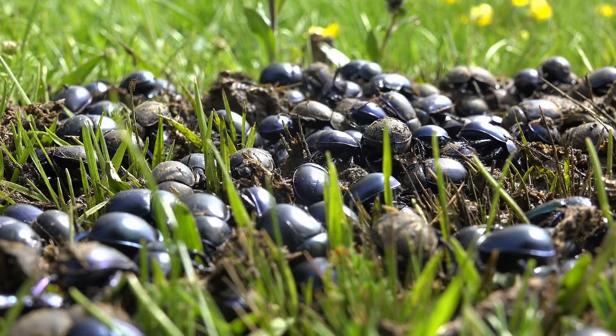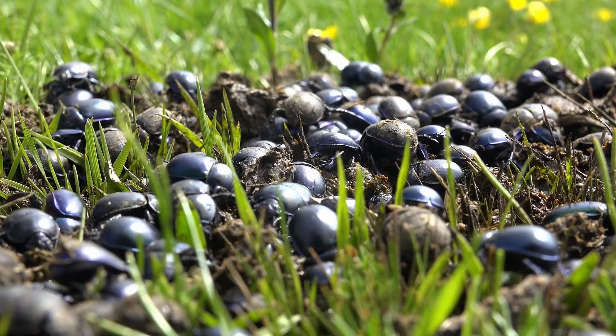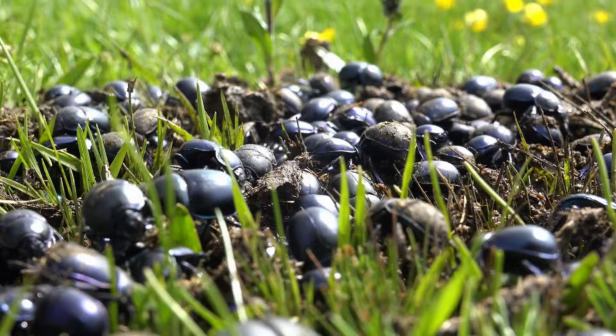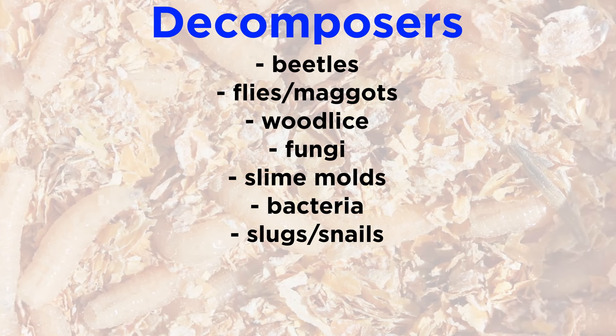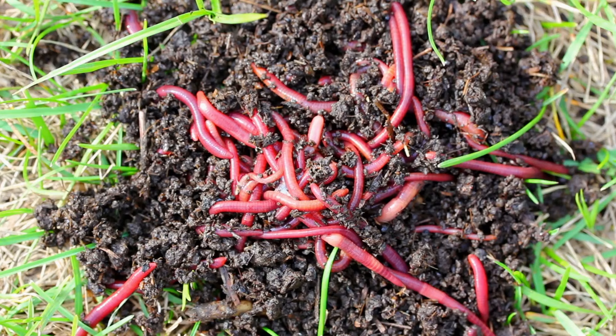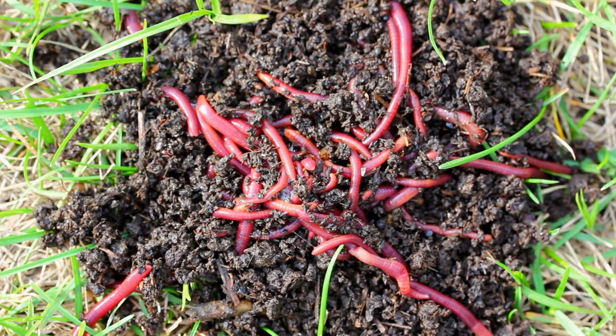A wide range of organisms takes part in the decomposition process. Most of them are inconspicuous and unglamorous, and from a conventional human perspective, even undesirable. The detritivore community includes insects such as beetles and their larvae, as well as flies and maggots, which are fly larvae. It also includes wood lice, fungi, slime molds, bacteria, slugs and snails, millipedes, springtails, and earthworms. Most of them work out of sight, and their handiwork isn't immediately obvious, but they are the forest's unsung heroes of recycling.